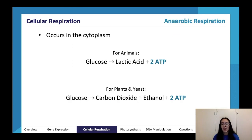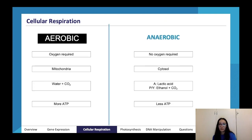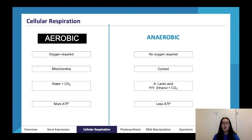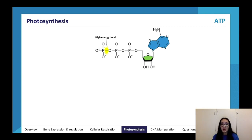A point to note: plants also undergo aerobic and anaerobic respiration — don't forget that just because they also perform photosynthesis. To summarize: aerobic respiration requires oxygen, occurs in the mitochondria, produces more ATP, and produces water and CO₂. Anaerobic respiration requires no oxygen, occurs in the cytosol, produces less ATP; in animals it produces lactic acid, and in plants and yeast it produces ethanol and CO₂.